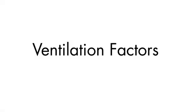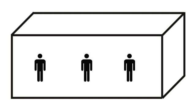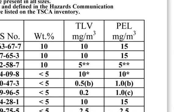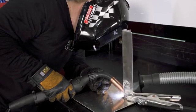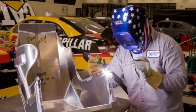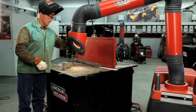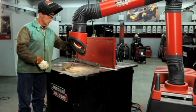The ventilation or exhaust needed for your application depends on many factors such as workspace volume, workspace configuration, number of welders, welding process and current, consumables used — mild steel, hard-facing, stainless, etc. — allowable levels such as TLV and PEL, and the material welded, including paint or plating, as well as natural airflow.